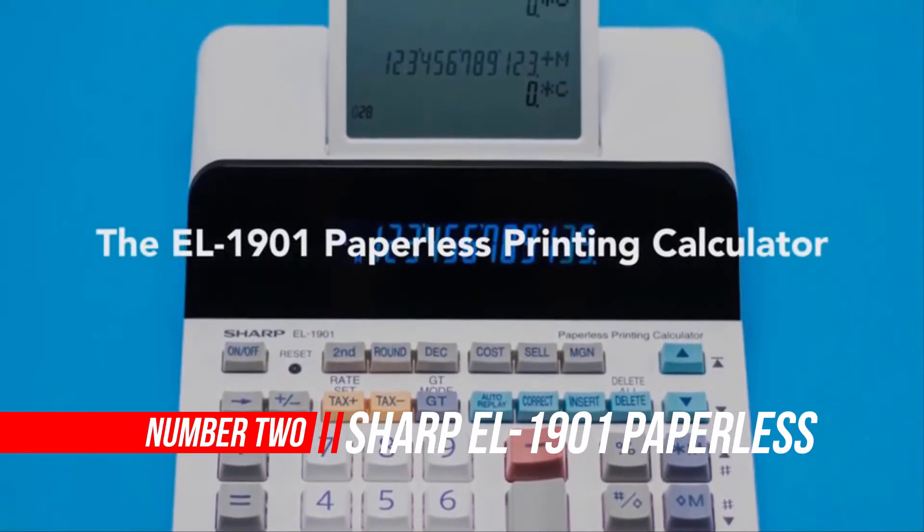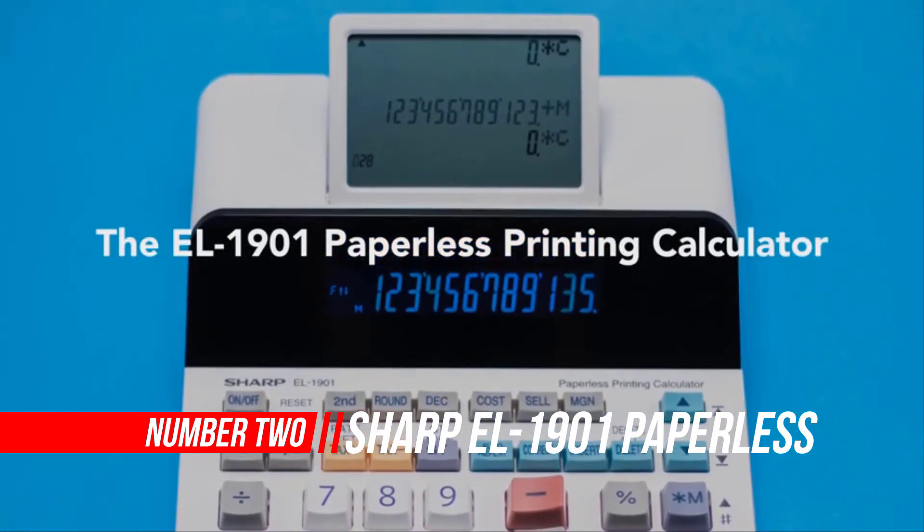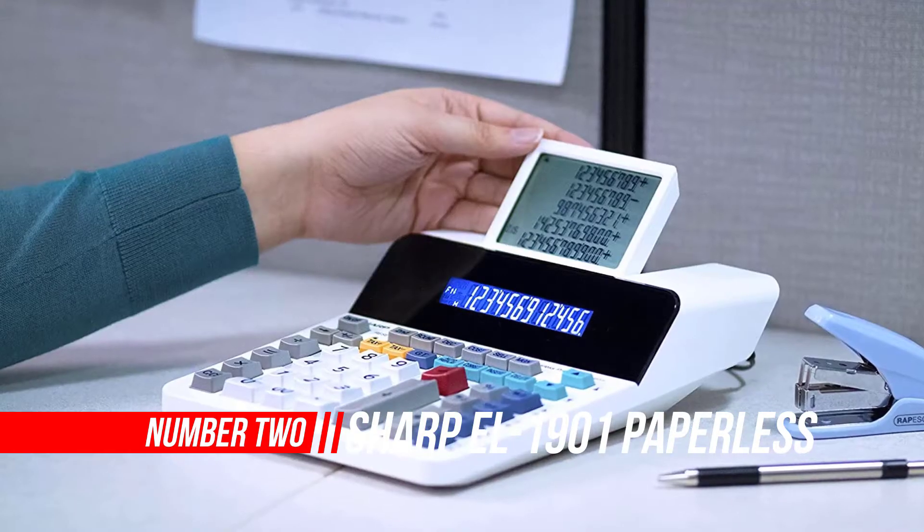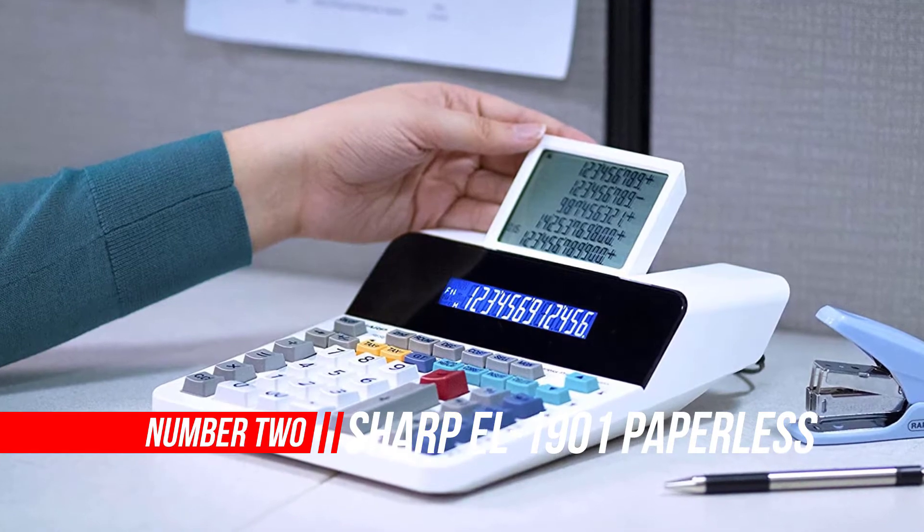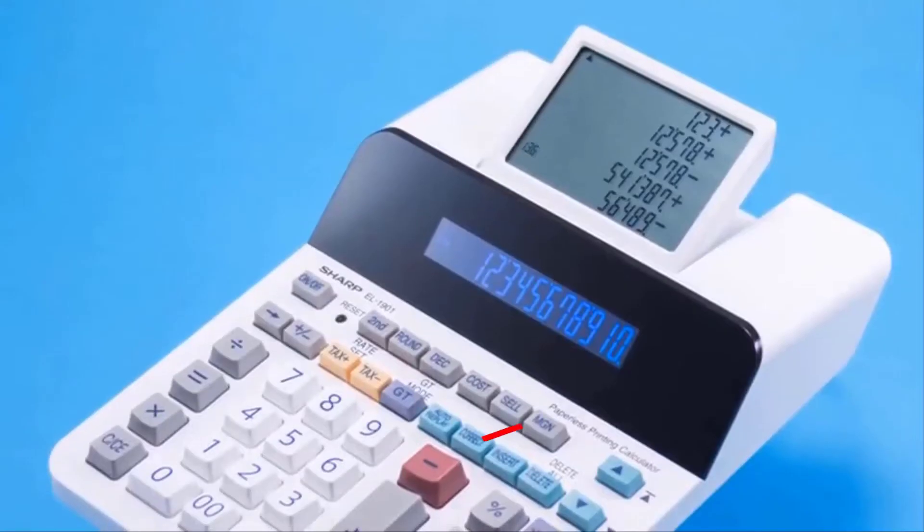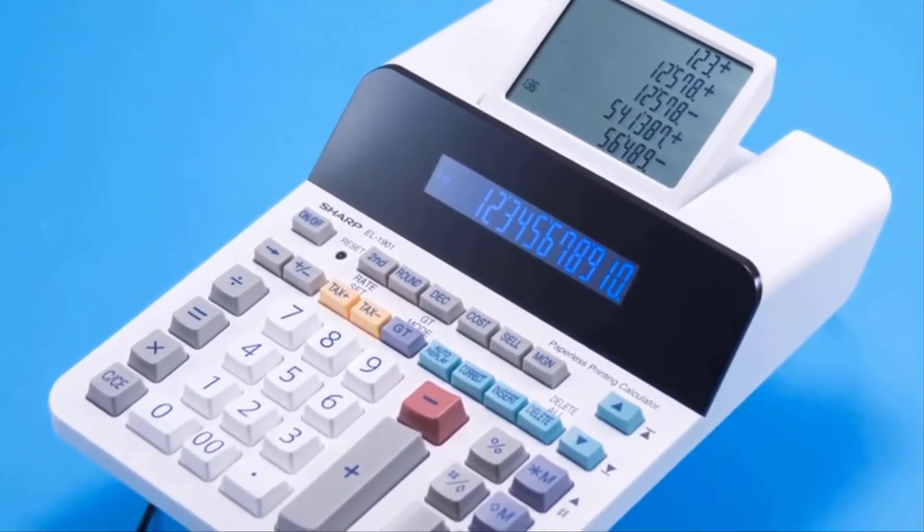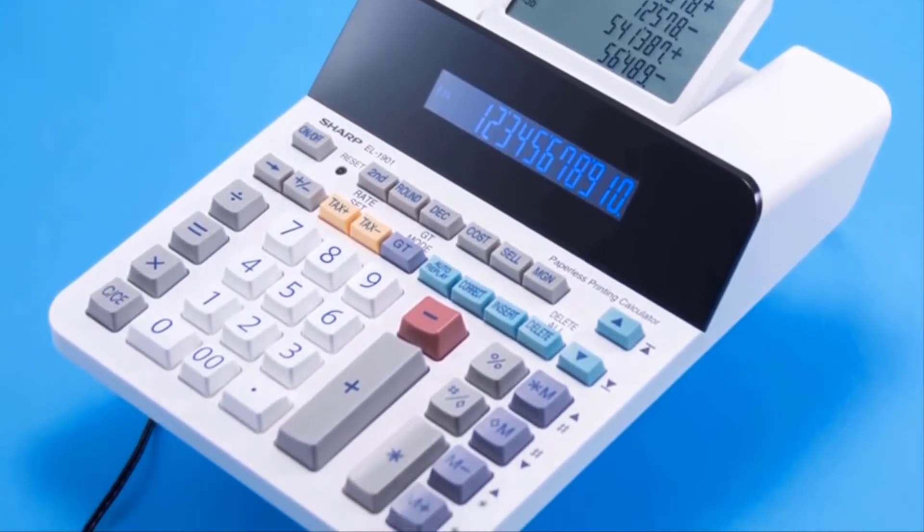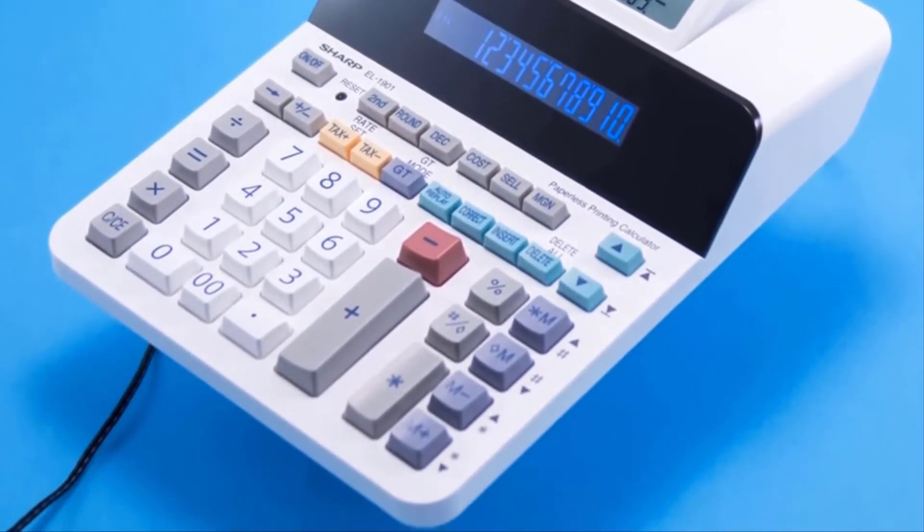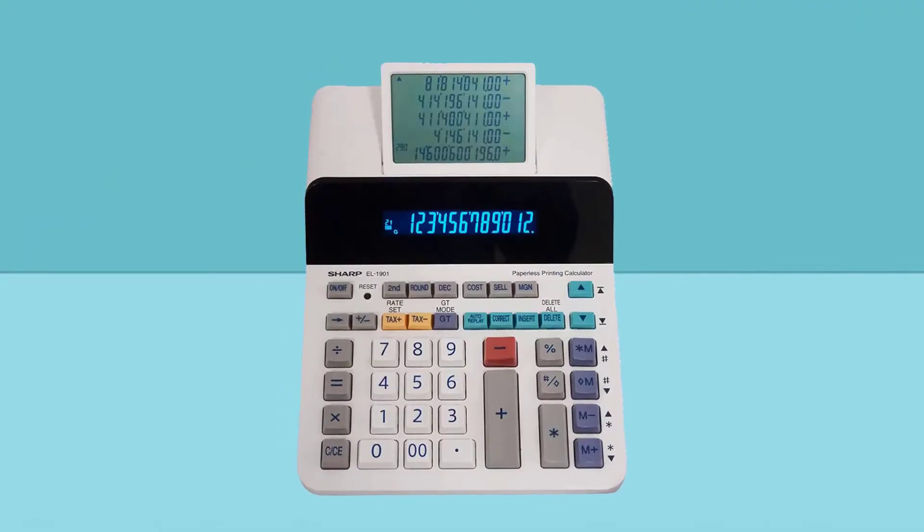Number 2. SHARP L1901 Paperless Printing Calculator. Adding machine with scrolling LCD display instead of paper. Paperless printing calculator with a 12-digit display features a unique, powerful design that combines the power of a printing calculator with the functionality of a desktop calculator.